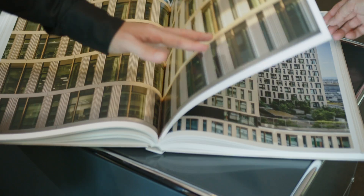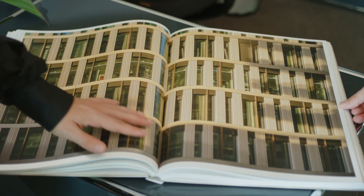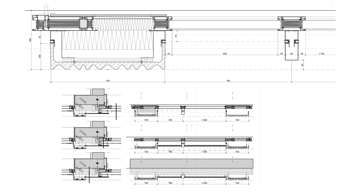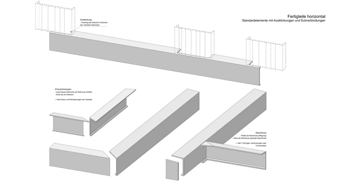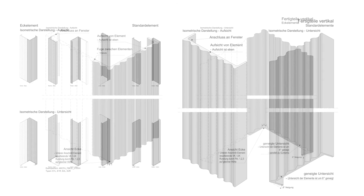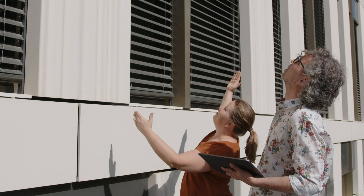We provided them with a master element containing abstract and detailed building blocks. After a short introductory training session, they were able to create the 45 facade types independently, enabling them to implement the complex facade in ARCHICAD. We created each of the 45 elements with the template script and replaced them in the model. The details for the component catalogue were created from the same elements.